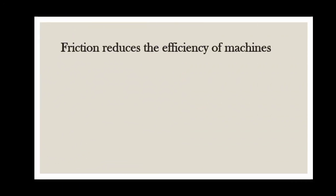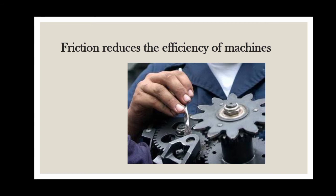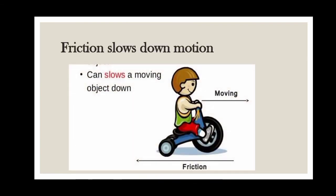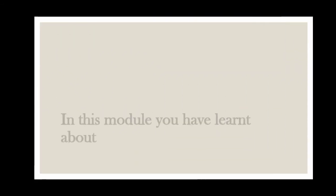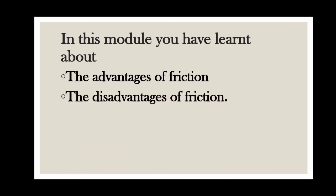The next disadvantage: friction reduces the efficiency of machines. Some of the energy supplied to run a machine is wasted in overcoming friction between its moving parts, and some energy is wasted as heat generated by the machine. This wastage of energy reduces the efficiency of a machine. The last disadvantage: friction slows down motion. All moving things such as cars, buses, aeroplanes, boats, and ships are slowed down by friction. In this module, you have learnt about the advantages of friction and the disadvantages of friction.